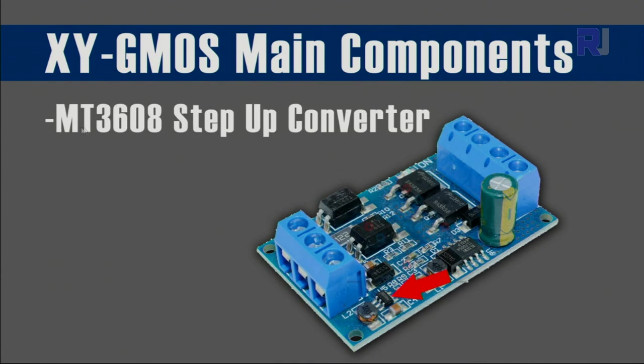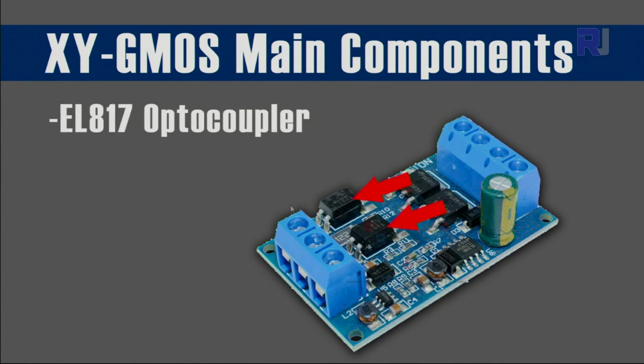This is the MT3608 chip, a step-up converter. This is providing enough voltage for triggering the gate of these MOSFETs. And EL817, these are two optocouplers that isolate the circuit using these two optocouplers.